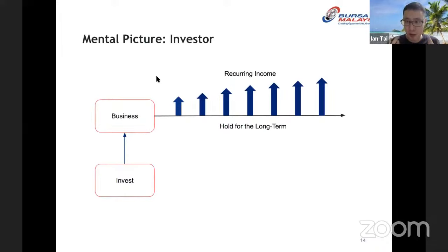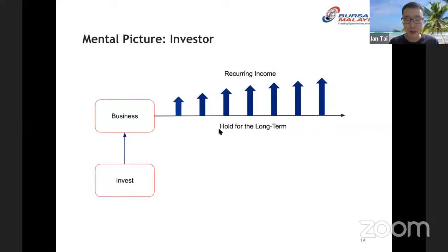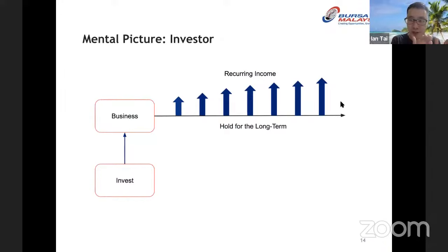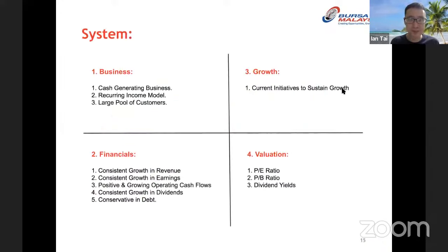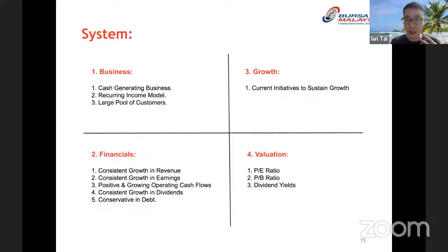The attitude here is to buy, keep, and not trade. The mental picture is: we invest capital into a stock, treating it like a business, held for the long term to generate recurring income. It's one transaction, multiple income. We also have a system — just to sidetrack briefly — as an investor, I decide which stock to buy or sell using a quadrant system. This covers the stock's business model, financial records, growth prospects, and valuation.